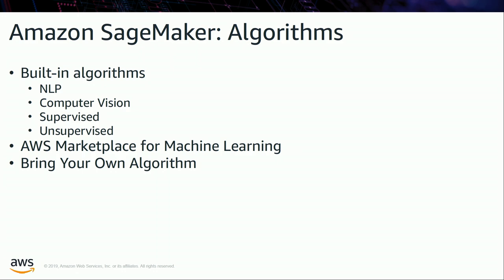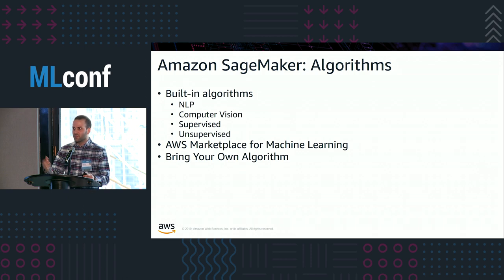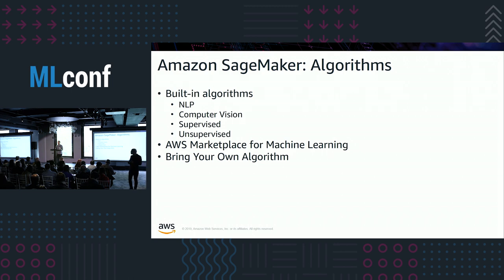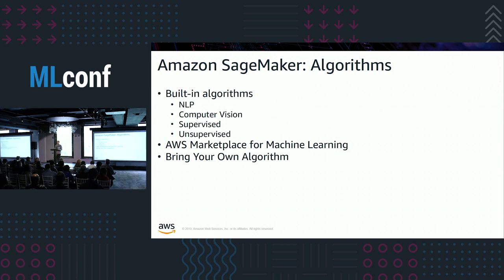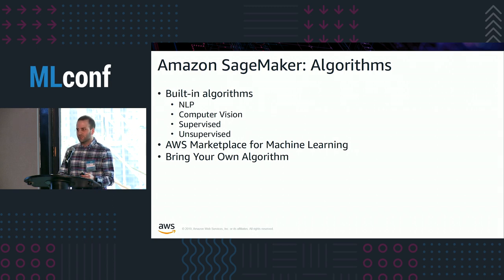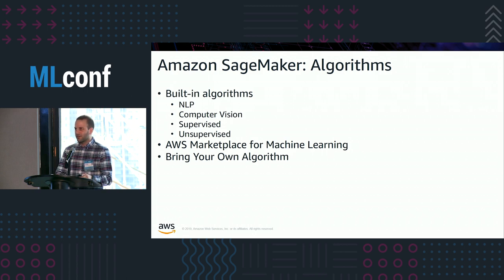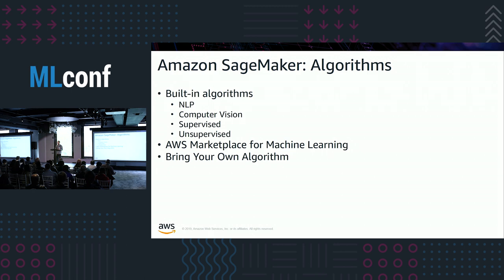I'll be focusing on the algorithms. There are built-in algorithms that my team and sister teams have worked on, including algorithms for NLP tasks, computer vision tasks, or more generally supervised or unsupervised algorithms — those involve writing zero code to integrate with. There's also the AWS Marketplace for machine learning, where third-party vendors have provided their own algorithms and model packages. And you can bring your own algorithms — anything you can put inside a Docker container.